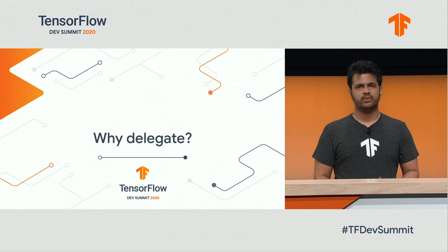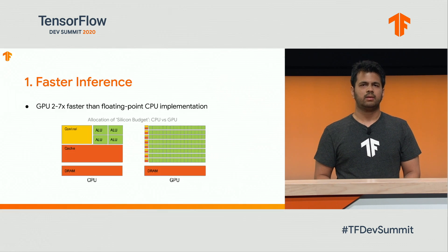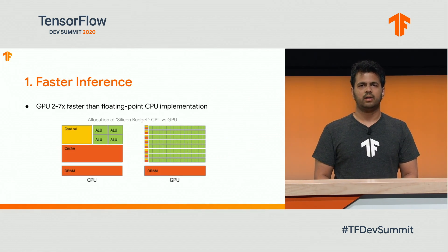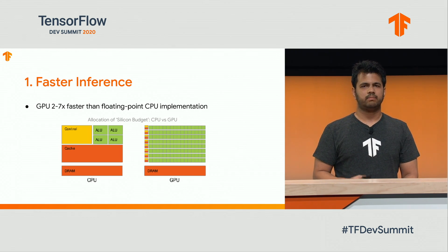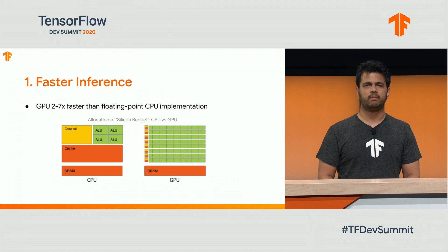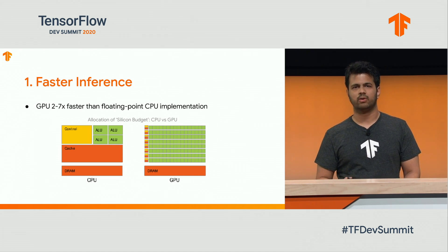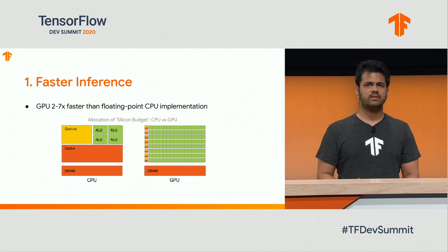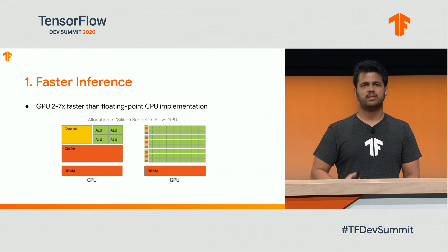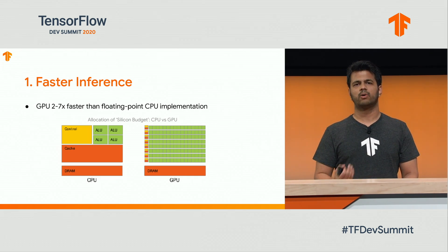A natural question here is, why would you use delegates at all? The most obvious benefit is faster inference. The classic example here is the GPU delegate. Because of the highly parallelized nature of the GPU, it is very good at performing matrix math, such as convolutions or fully connected layers. As a result, when we use our GPU delegate with TensorFlow Lite, we observe up to 7x speedups with a lot of the vision models that are currently used on mobile devices.